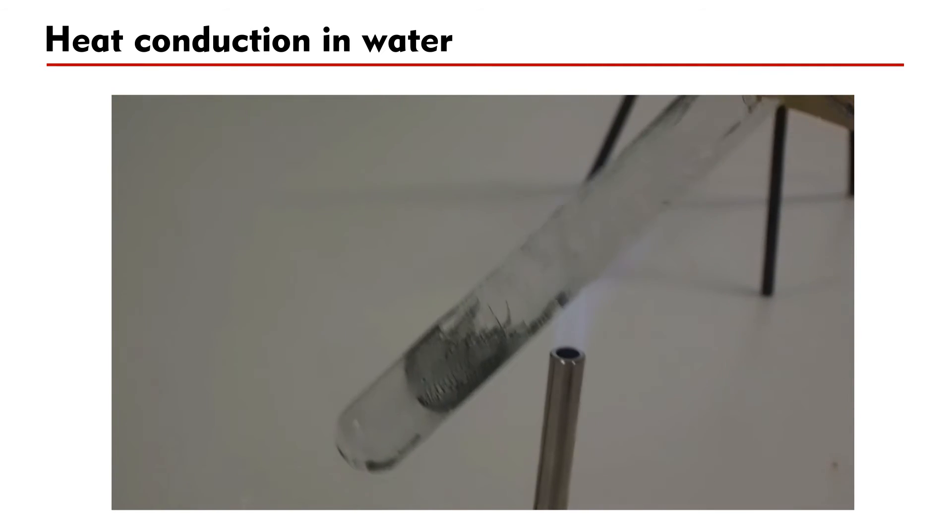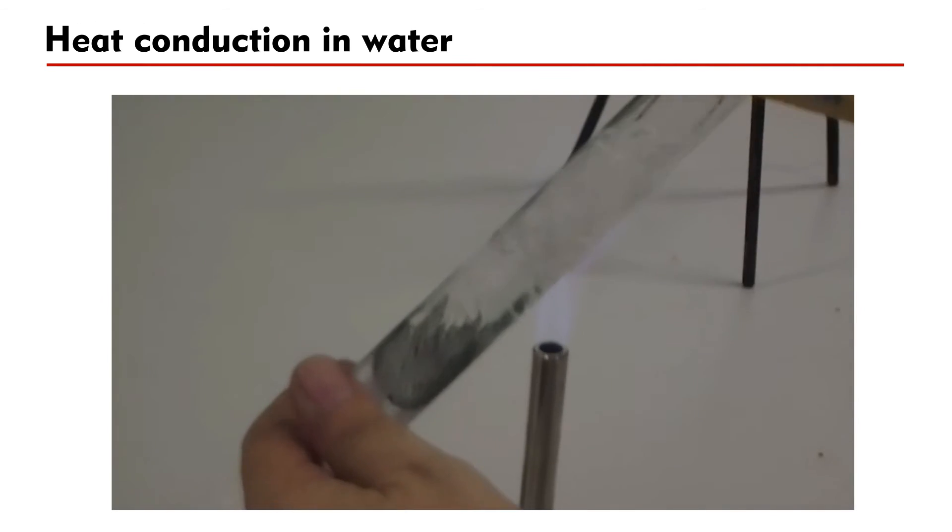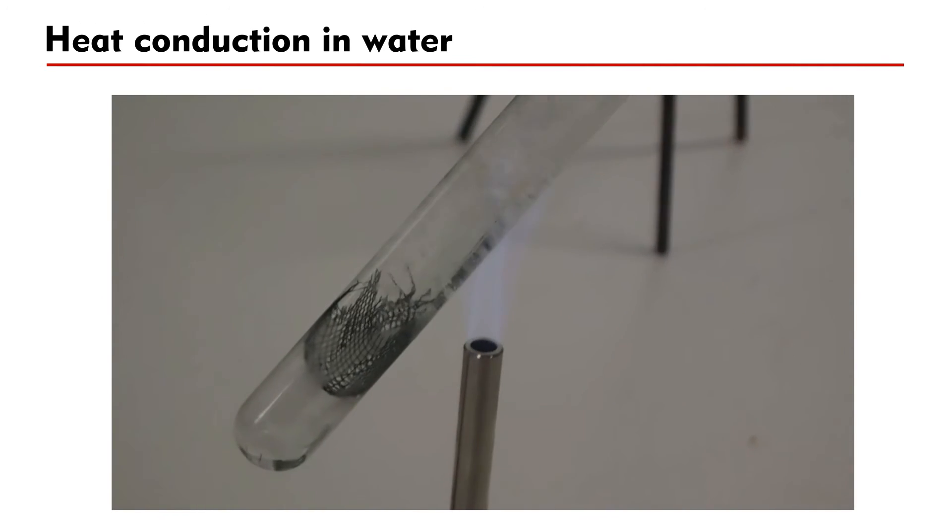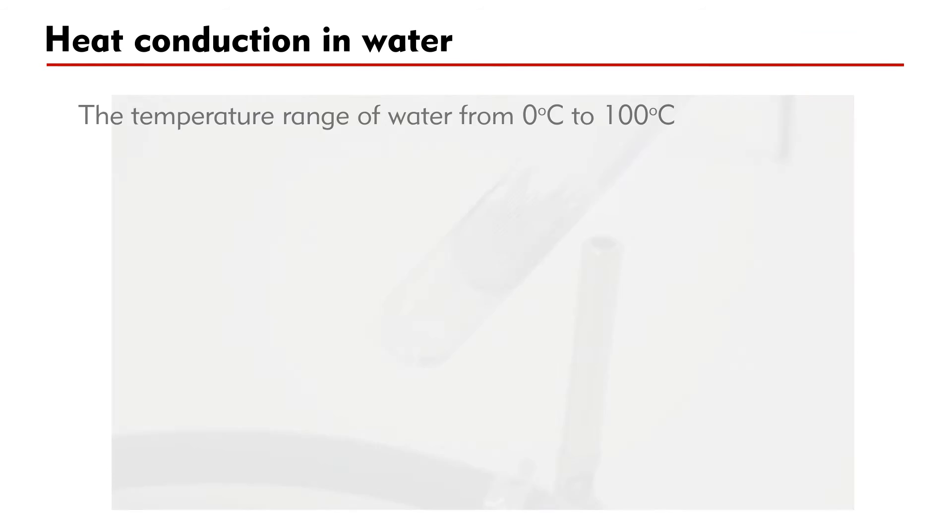We can even touch the part of the boiling tube where ice can be found. However, never touch the part where water boils. The temperature of the water inside the tube ranges from 0 degrees Celsius to 100 degrees Celsius. This experiment shows that water is not a good heat conductor.